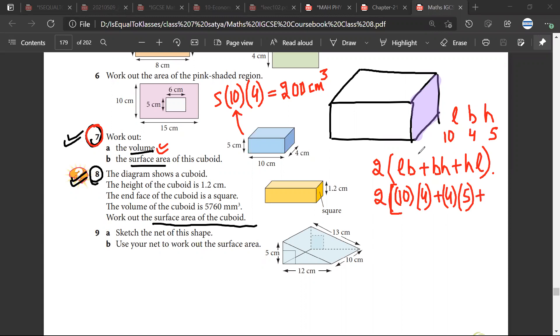So twice of lb plus bh plus hl. So this is the lb, this is the bh, and this is the hl. 5 into 10. Sarthak, is it okay? Yes. So 60 plus 50 is 110, into 2 would be 220.